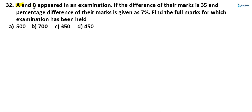A and B appeared in an examination. If the difference of their marks is 35 and the percentage difference of their marks is given as 7%, find the full marks for which the examination has been held. Here we require the full marks.